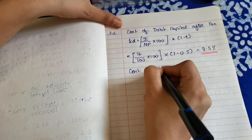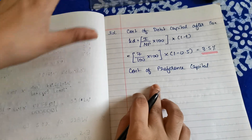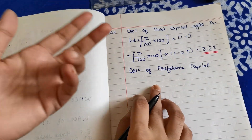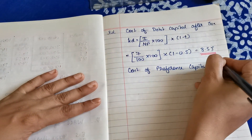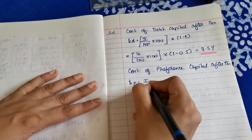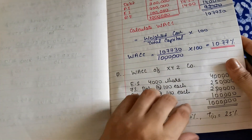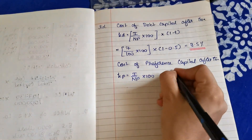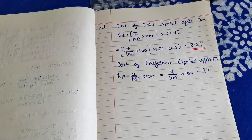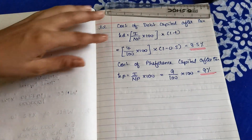Cost of preference capital: preference capital when calculated is already after tax, so we don't need a reverse calculation here since we only require the after-tax figure. The formula is Kp equals I upon net proceeds into 100. The interest given is 9% of rupees 100 each, so: 9/100 × 100 = 9%. The after-tax cost of preference capital is 9%.